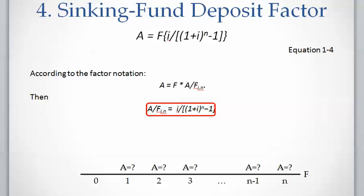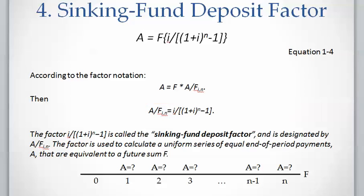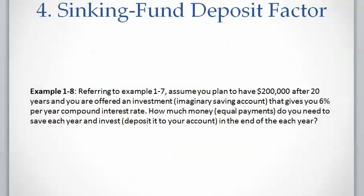We can write this equation using factor notation: A equals F times the factor A over F. This factor is called the sinking fund deposit factor and is displayed as A slash F. The factor is used to calculate the uniform series of equal end-of-period payments A that are equivalent to a future sum F.